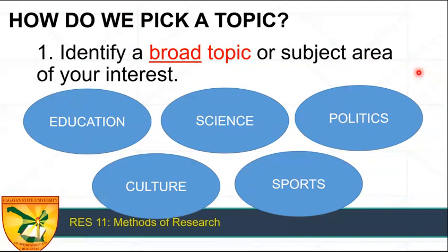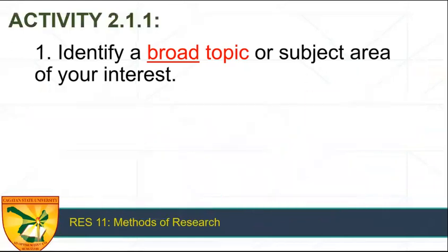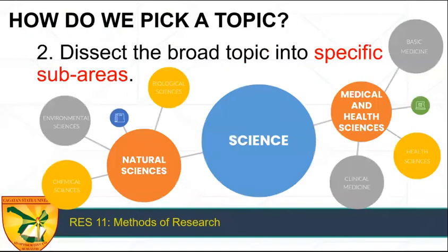Choose a topic that you are passionate about because you will do this study for one year at least. It is hard to stay if you are not really interested. These are examples of broad topics. I assume you will go to the broad topic science or broad topic health. So for your activity 2.1.1 number one, you identify a broad topic or subject area of your interest. You can start with a problem area. For example, because of COVID restrictions, there is a problem with education. So I choose education.